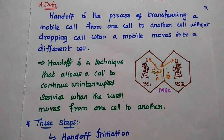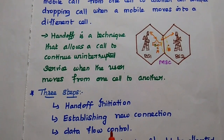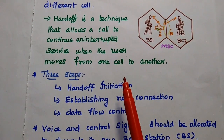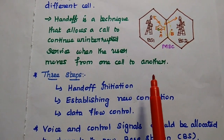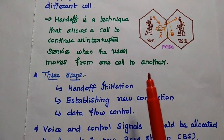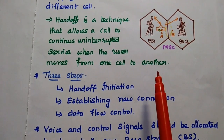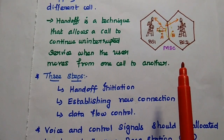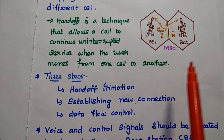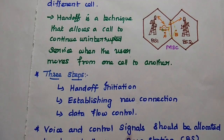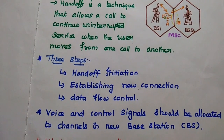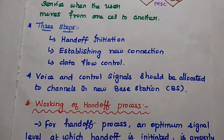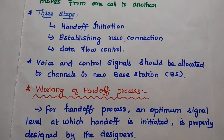Handoff is the process of transferring a mobile call from one cell to another cell without dropping the call — that is, the call continues uninterruptedly. It is a very important process in cellular concept. There are three steps: first, initiate the handoff process; second, establish a new connection; and finally, ensure data flow control. Both voice and control signals should be allocated to the new channel in the new base station.